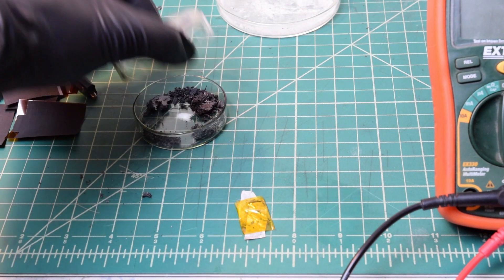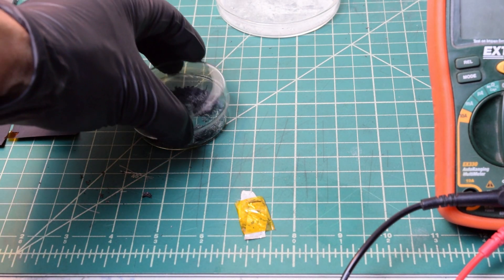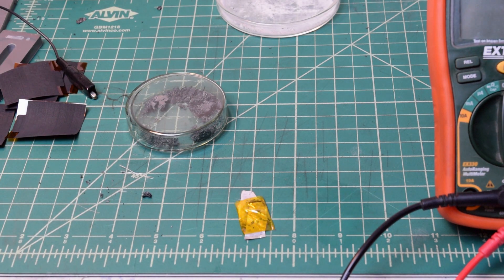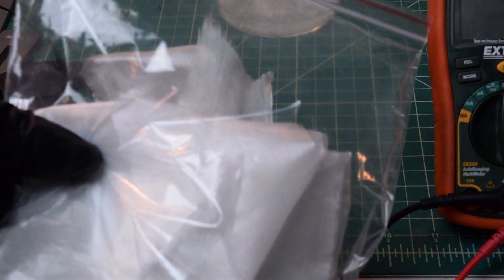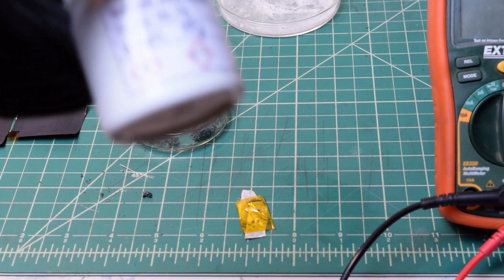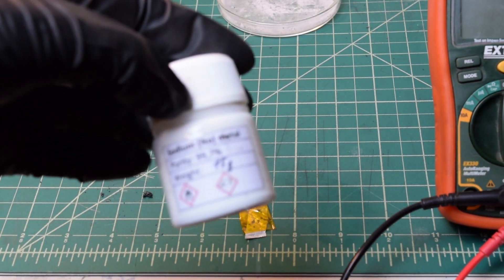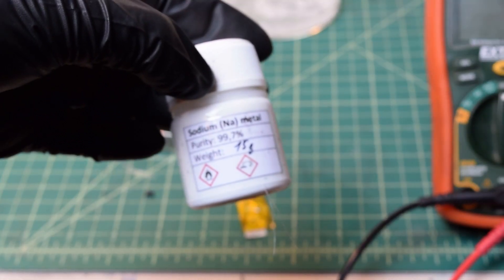The cathode is a small piece of broken graphene aerogel with a strip of aluminum to act as a contact. The electrolyte is just two pieces of ultra-thin fiberglass, and the anode is made from a paper-thin sliver of sodium metal.